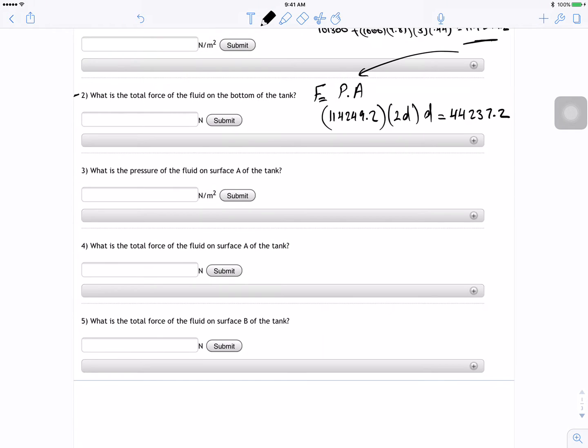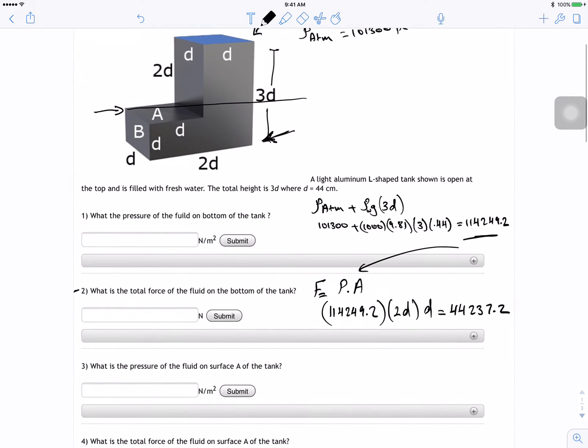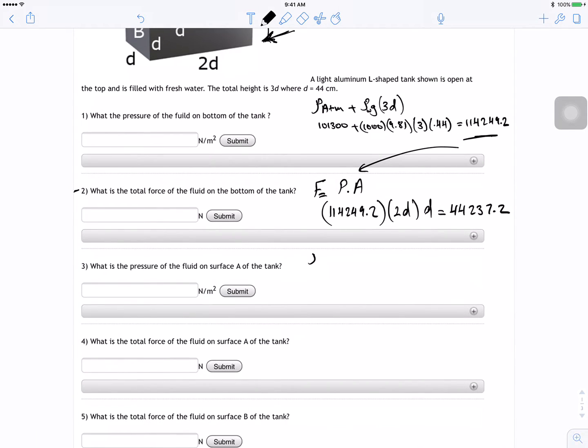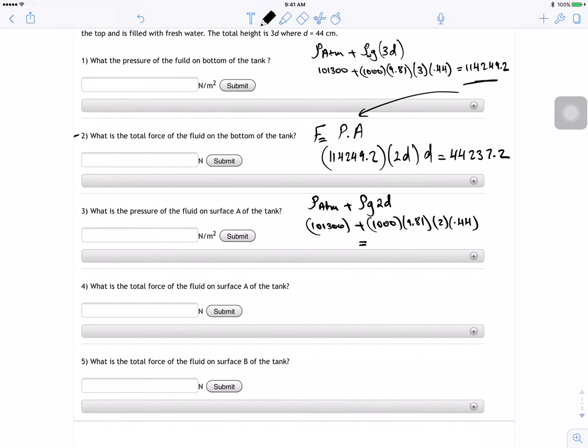And now what's the pressure of the fluid on the surface of A? A is right here. And we know that the pressure at all these points in here is going to be the same. So the pressure for this guy is going to be atmospheric pressure plus the rho g h and then the h is going to be just 2d in this case. So 101,300 plus 1000 plus 9.81 times 2 times 0.44. And for this guy I got 109932.8 N per meter squared.